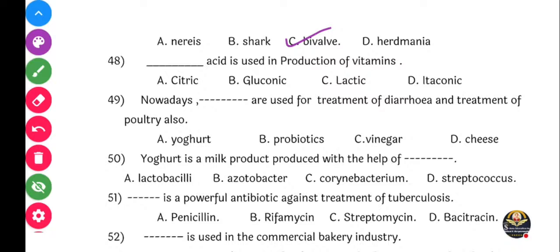Next question: Dash acid is used in production of vitamins. Vitamins na production madhe kontha acid vahapadla zaata? Options: Citric acid, gluconic acid, lactic acid, or etagonic acid. Correct answer: lactic acid, option C.